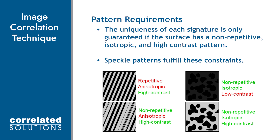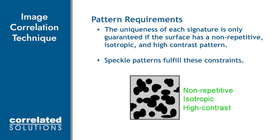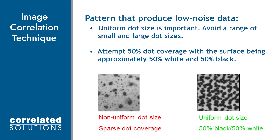White on black or black on white speckle patterns meet this specification well because they are random, not directionally dependent, and high contrast. Additionally, a uniform dot size and consistent 50% dot coverage on the surface will result in higher confidence in subset matching, reducing the noise and uncertainty in our measurements.